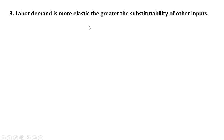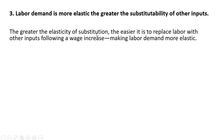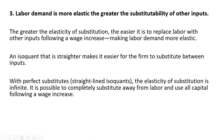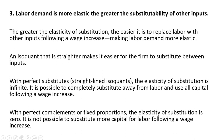Rule 3: Labor demand is more elastic the greater the substitutability of other inputs. The greater the elasticity of substitution, the easier it is to replace labor with other inputs following a wage increase, making labor demand more elastic. An isoquant that is straighter makes it easier for the firm to substitute between inputs. With perfect substitutes — straight-lined isoquants — the elasticity of substitution is infinite, and it is possible to completely substitute away from labor and use all capital following a wage increase. With perfect complements or a fixed proportions production process, the elasticity of substitution is zero, and it is not possible to substitute more capital for labor following a wage increase.